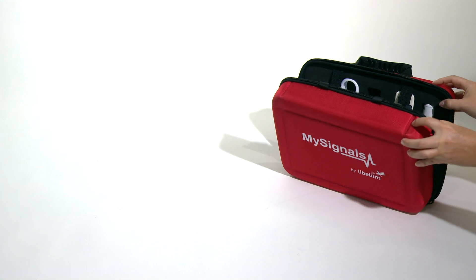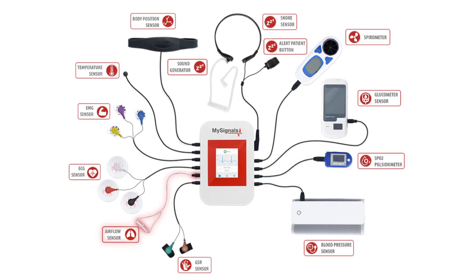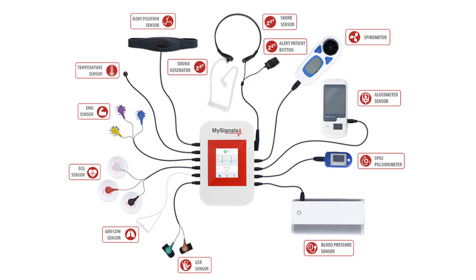MySignals allows you to measure more than 15 different biometric parameters, such as pulse, breath rate, oxygen in blood, electrocardiogram signals, blood pressure, muscle electromyography signals, glucose levels, galvanic skin response, lung capacity, snore waves, patient position, airflow, and body scale parameters.